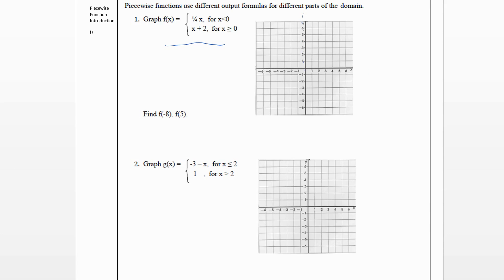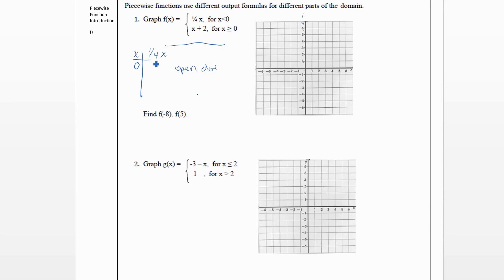Let's look at just this top piece for x less than zero. For all x values less than zero, we're going to use the line one-fourth x. We'll start with zero, and since this says less than zero, we need to put an open dot here because we don't actually include zero. One-fourth times zero is zero, so we'll have an open dot at the origin.